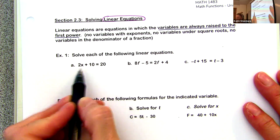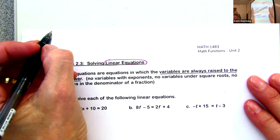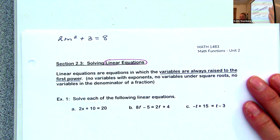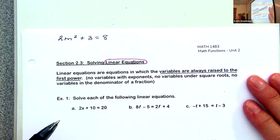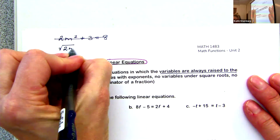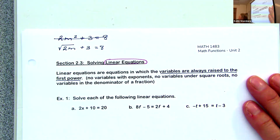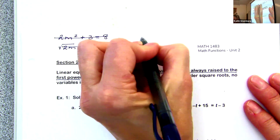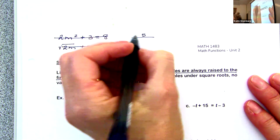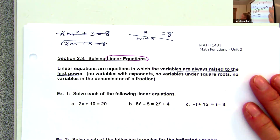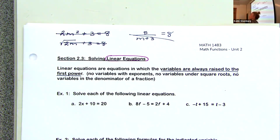In this section, you're not going to solve equations like 2m² + 3 = 8 — that's not linear because the exponent is larger than 1. We also won't do equations with a radical or square root like √(2m) + 3 = 8, nor equations where the variable is in the denominator like 5/m + 3 = 8. If you want to do those, take our algebra for STEM course.